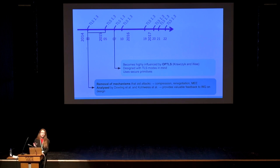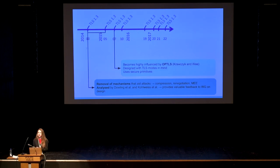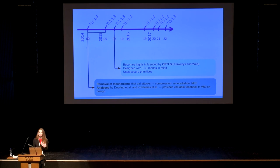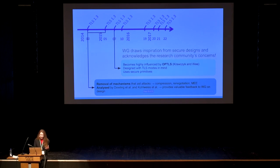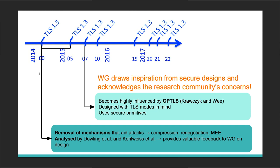From draft 7 onwards, there was a radical shift away from TLS 1.2: the protocol became highly influenced by OPTLS of Krawczyk and Wu. Static Diffie-Hellman and static RSA were removed in favor of ephemeral Diffie-Hellman, and the protocol adopted secure, well-known, well-analyzed primitives. Krawczyk and Wu provided a full analysis of their protocol, covering the many use cases and modes needed for TLS 1.3, and the working group drew inspiration from these secure designs while acknowledging the research community's analytical needs.